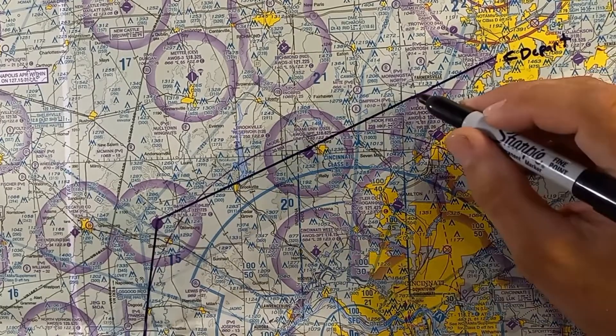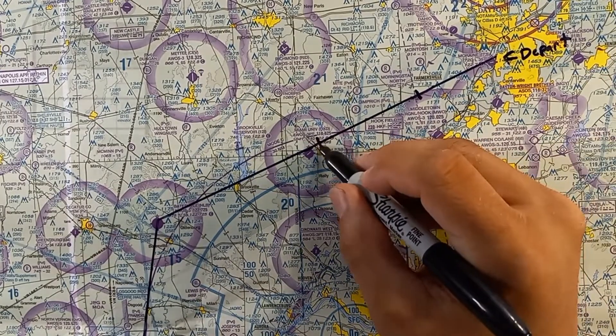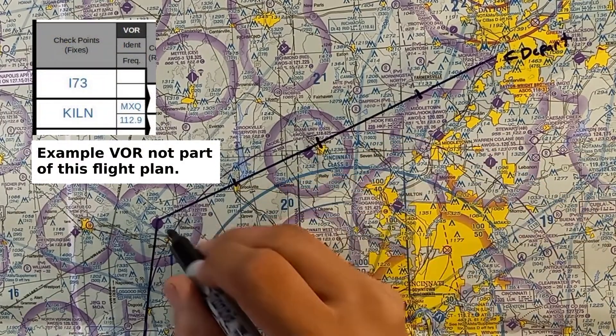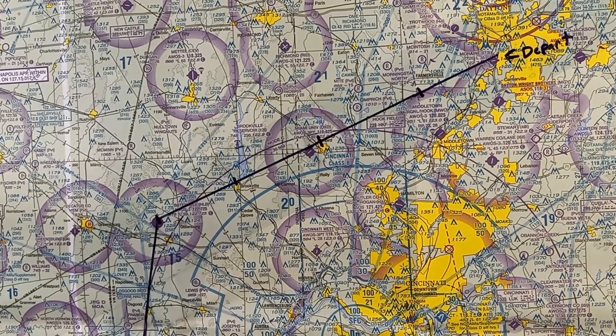Mark and label your checkpoints and copy them into your VFR nav log. If a VOR will provide course guidance to your checkpoint, write its identifier and frequency in the box to the right.